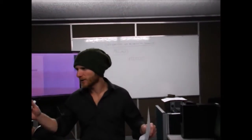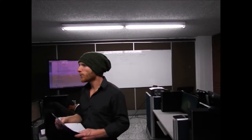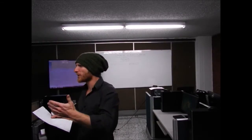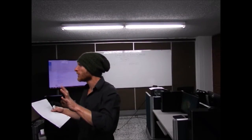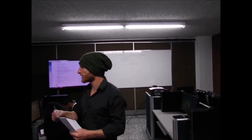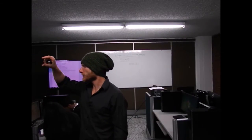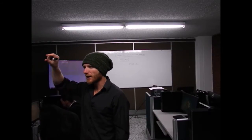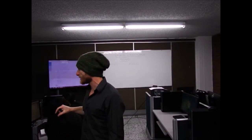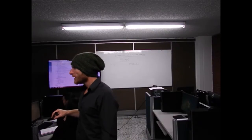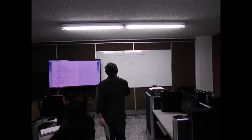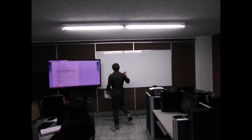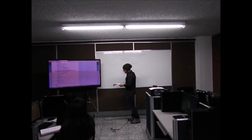Las semillas son los puntos donde después se empezará el alineamiento. Esto reduce mucho la búsqueda: ya no hay que alinear en todas las posiciones, sino solamente en los puntos donde se encuentran las semillas. Esta es la parte local del algoritmo.